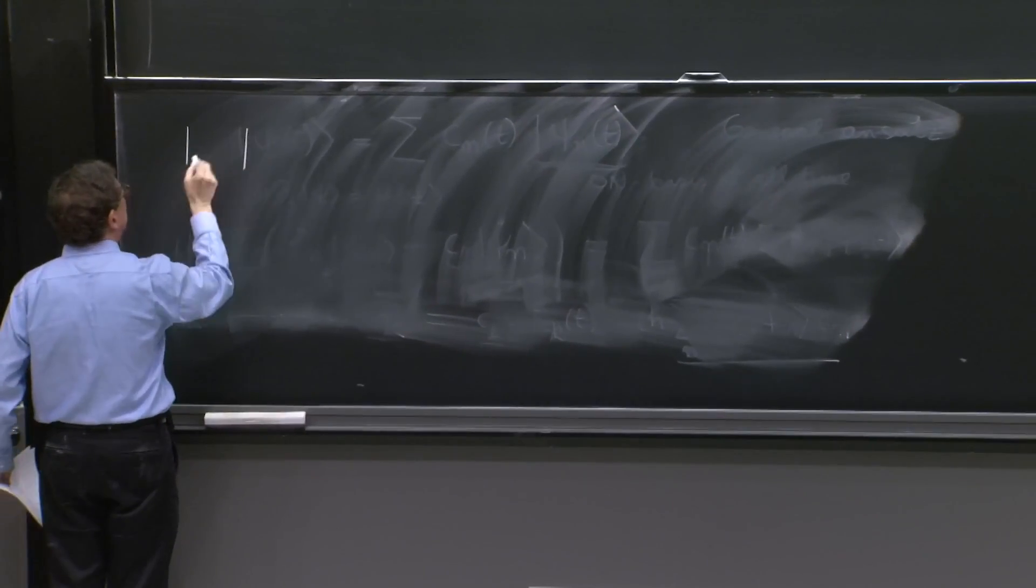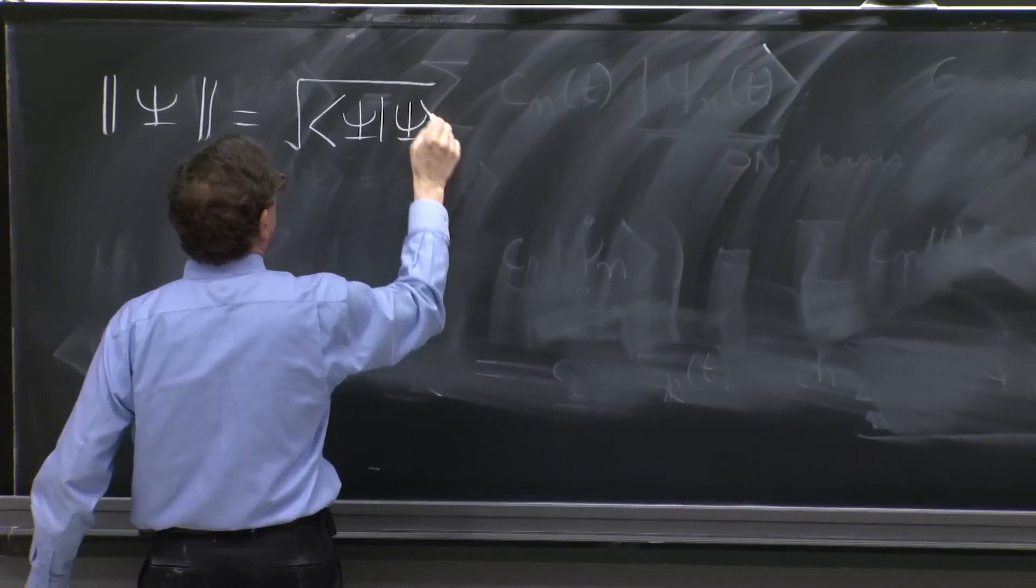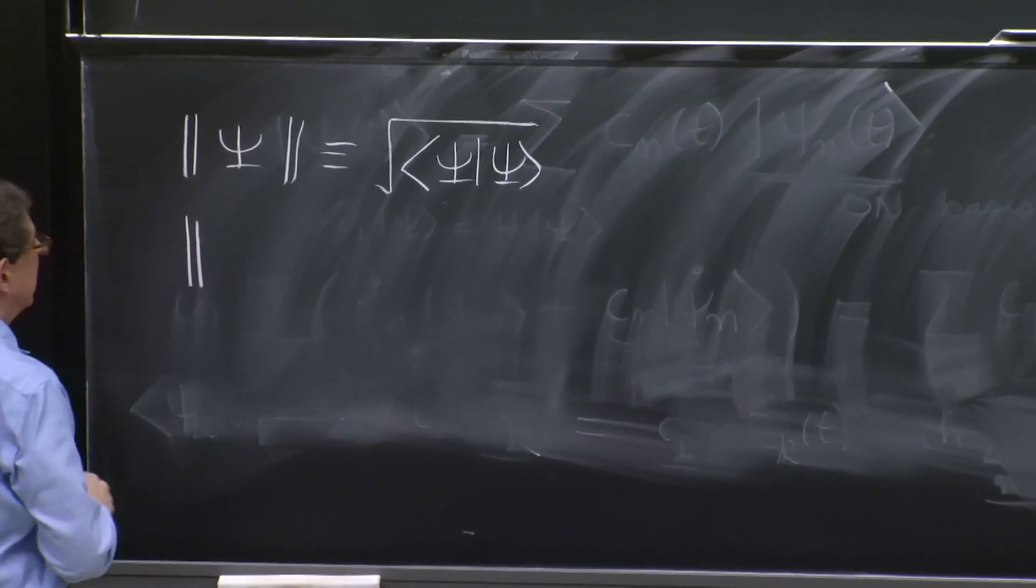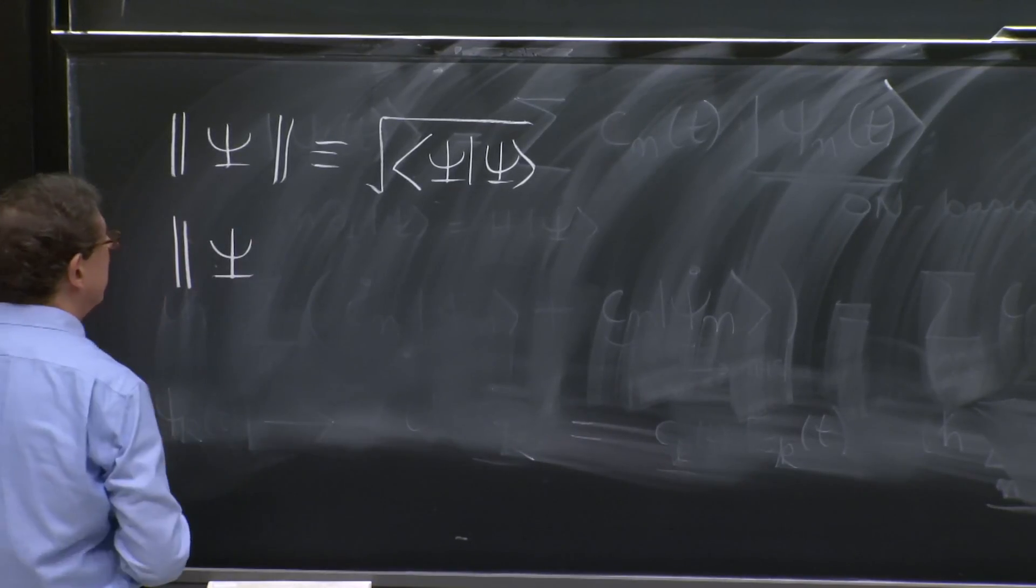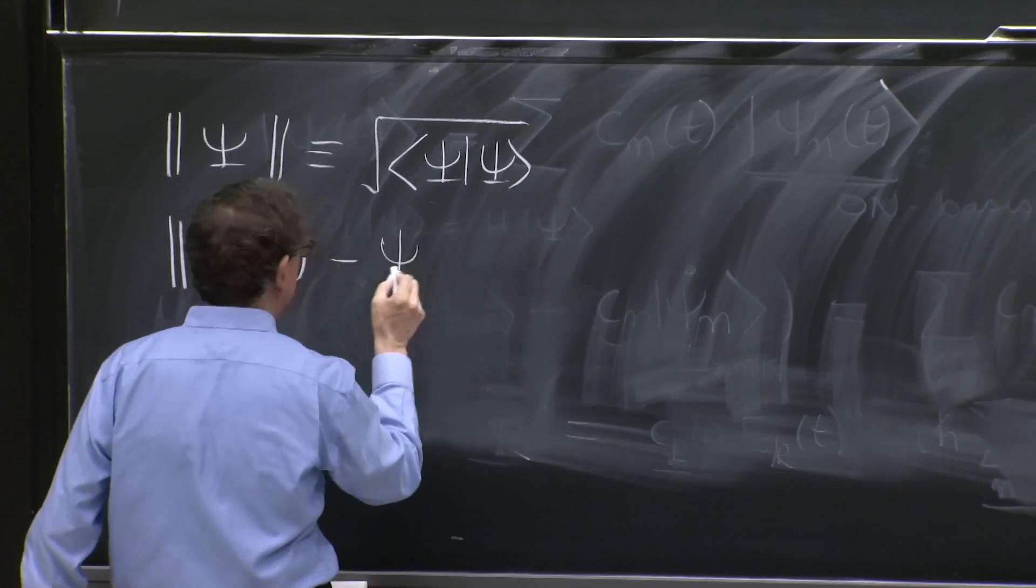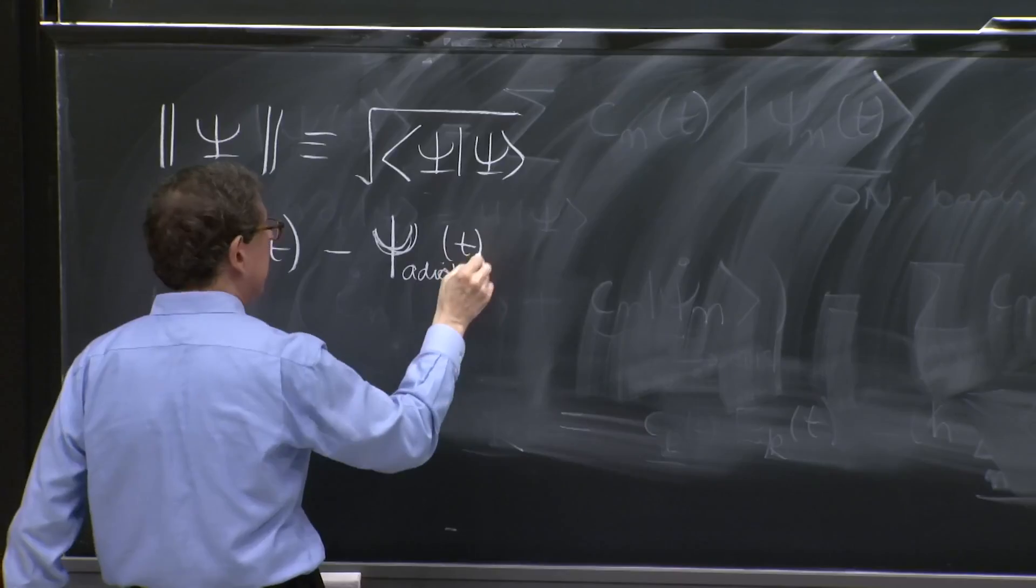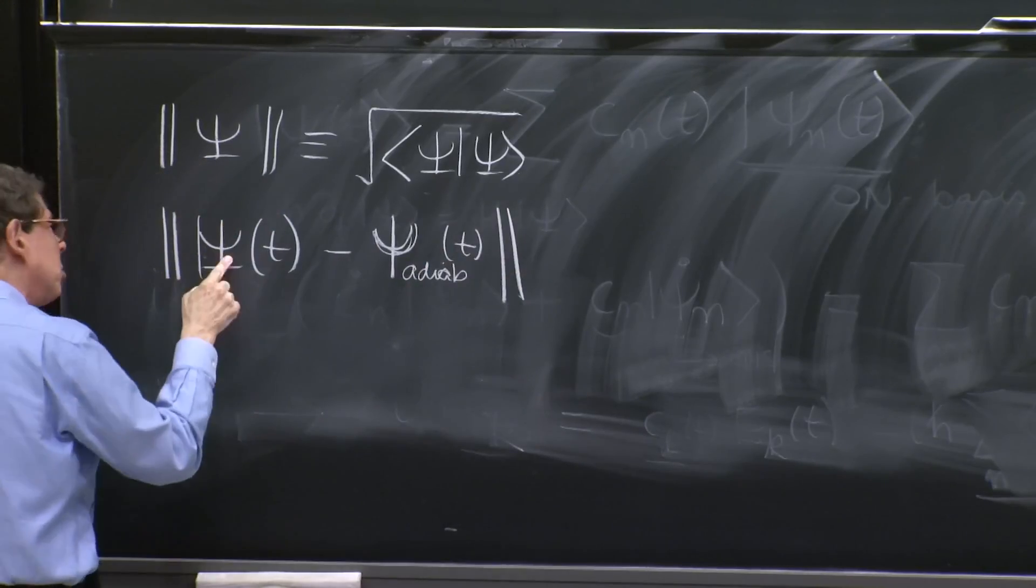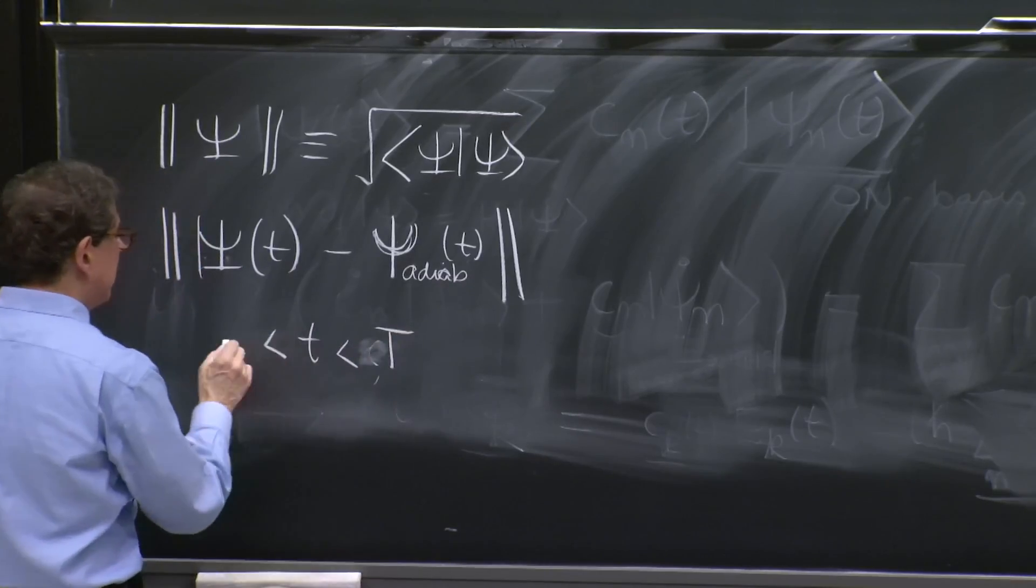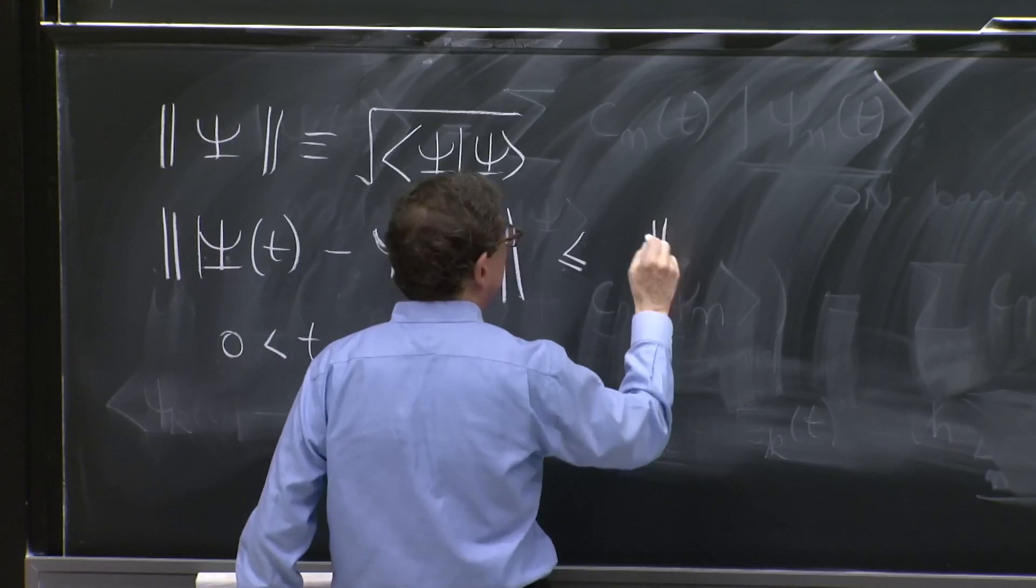If you have the norm of a wave function, you can define the square root of the overlap of the wave function, then the way people precisely state the adiabatic theorem is that the state psi during a time t minus the psi adiabatic, the ansatz for the adiabatic state at time t,